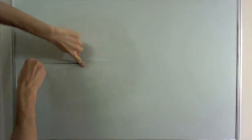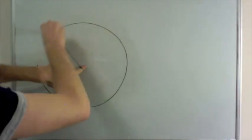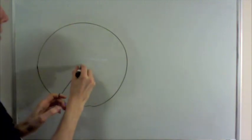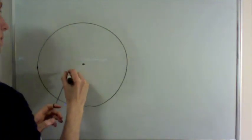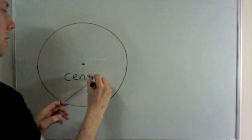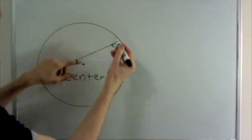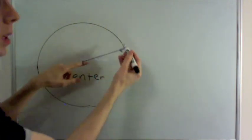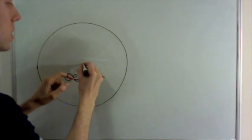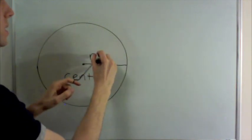Actually, I can use this string to draw a circle on the board. The point at the center is called the center, and the distance from any point on the circle is always the length of the string, and it has a special name. It's called the radius of the circle.